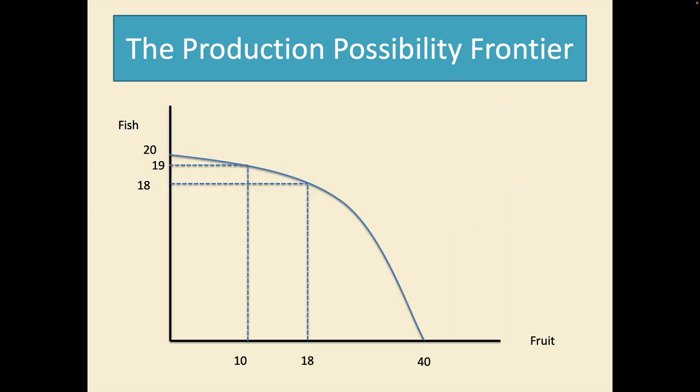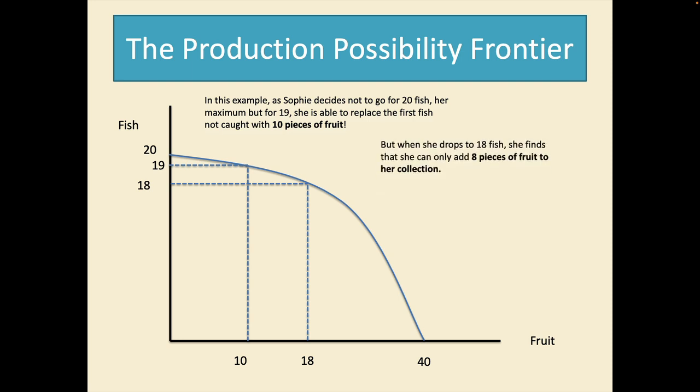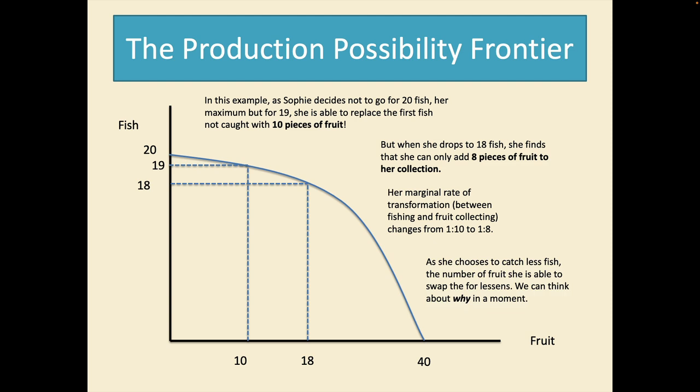So in this example as Sophie decides not to go for the 20 maximum fish she goes for 19. She's able to replace the first fish not caught with 10 pieces of fruit. But when she drops to 18 fish she finds that she only adds eight pieces of fruit to her collection. Her marginal rate of transformation between fishing and fruit collecting changes from 1 to 10 to 1 to 8. The slope is changing. As she chooses to catch less fish the number of fruit she's able to swap therefore lessens, diminishes and we can think about why in a moment. But this is an example of the law of diminishing returns. She's getting less return as she moves from one activity to another.